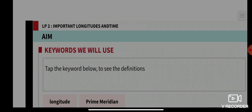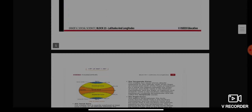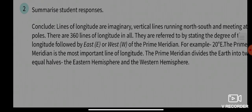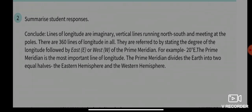As you can see here, it is the Greenwich Meridian, also called the prime meridian. Lines of longitude, as I've explained, are imaginary vertical lines running north and south and meeting at the poles. There are 360 lines of longitude in all.